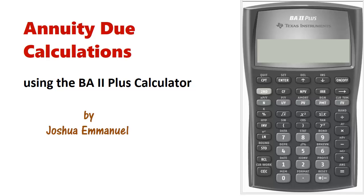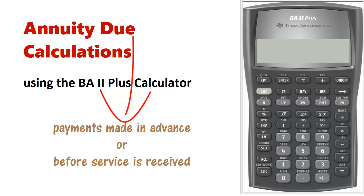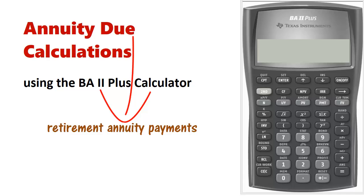Hello and welcome. In this tutorial, we will be solving problems involving annuity due. In an annuity due, periodic payments are made at the beginning of a payment period. It could also be that the periodic payments are made in advance or before the service is received. Examples are retirement annuity payments, rent payments, and insurance payments.